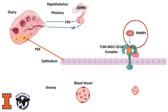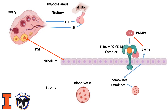Upon detection of the pathogen-associated molecular patterns by this transmembrane complex, the endometrial cells will secrete chemokines such as interleukin-8, and cytokines such as interleukin-1-beta, but also antimicrobial peptides to fight these foreign molecules. The cytokines and chemokines will direct the immune response, attracting polymorphonuclear cells such as neutrophils, and also macrophages to eliminate the bacteria.